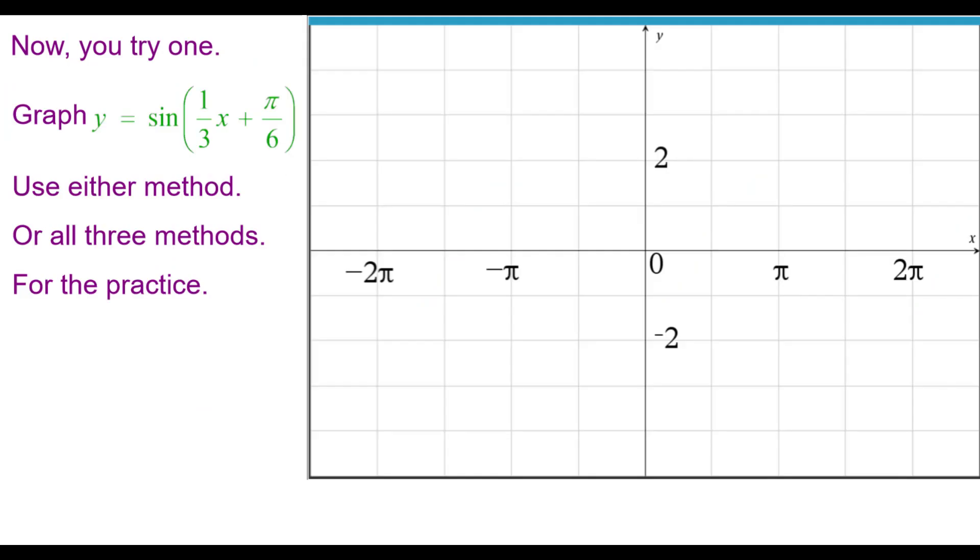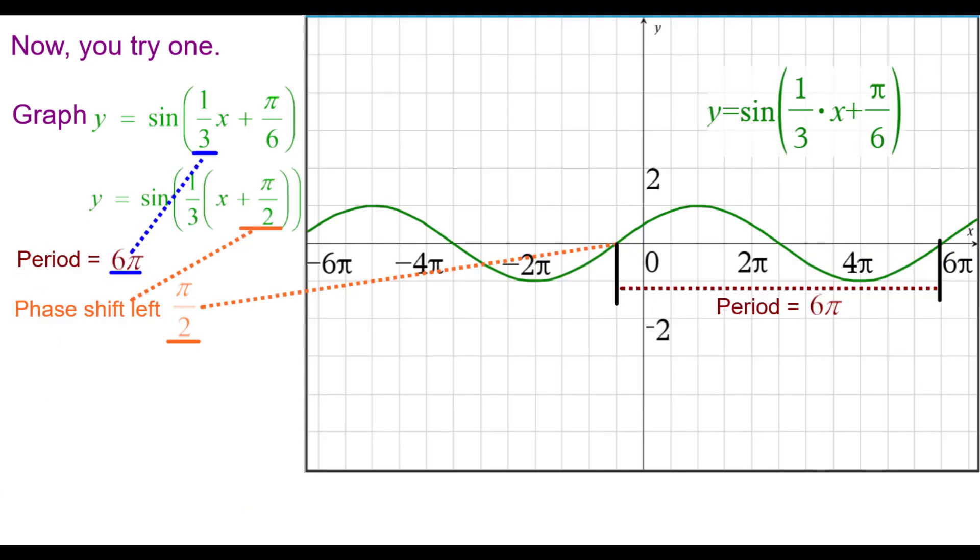Now you try one. Graph y equals the sine of the quantity 1 third x plus pi over 6. Use either method or all three for the practice. Give you a hint, you will need to change the units. Pause as needed. Resume when you're ready.